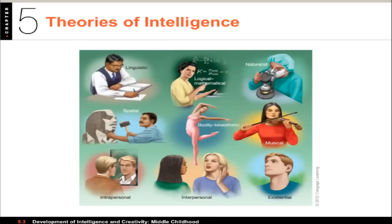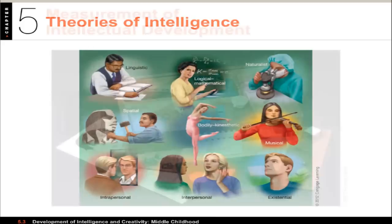A savant would actually be very poor at many of the other intelligences. While it's still an open debate, it's interesting because it suggests there might be more to intelligence than just a single smart-versus-dumb factor.